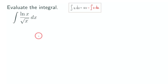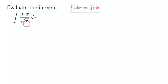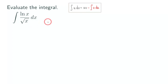Hello everyone. Let's do more integration by parts today. We have this integral here — the integral of ln(x) over the square root of x. This doesn't look like a product; it's actually a quotient. We have ln(x) divided by the square root of x, but we can rewrite it as a product so that we can use integration by parts to integrate this function.